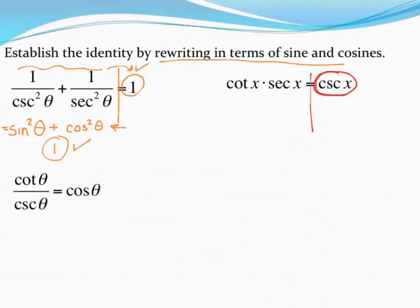Cotangent is the same thing as cosine over sine. Maybe you have that memorized, or maybe you have to see that in your identities chart. Either way, it's the same thing as cosine of x over sine of x. Some people say cotangent is the same thing as 1 over tangent, and I say that's true.